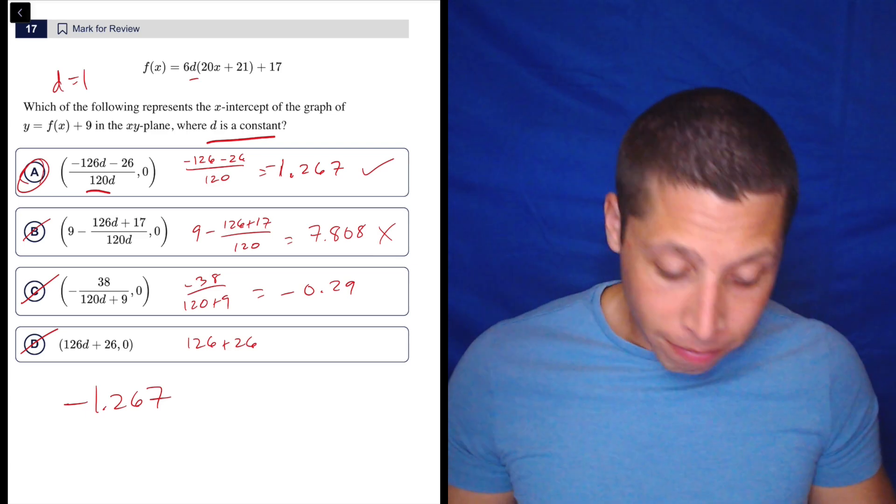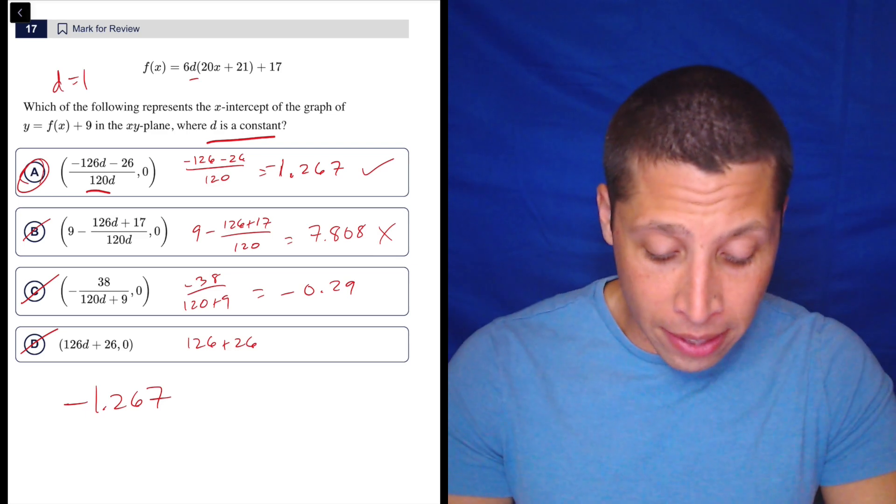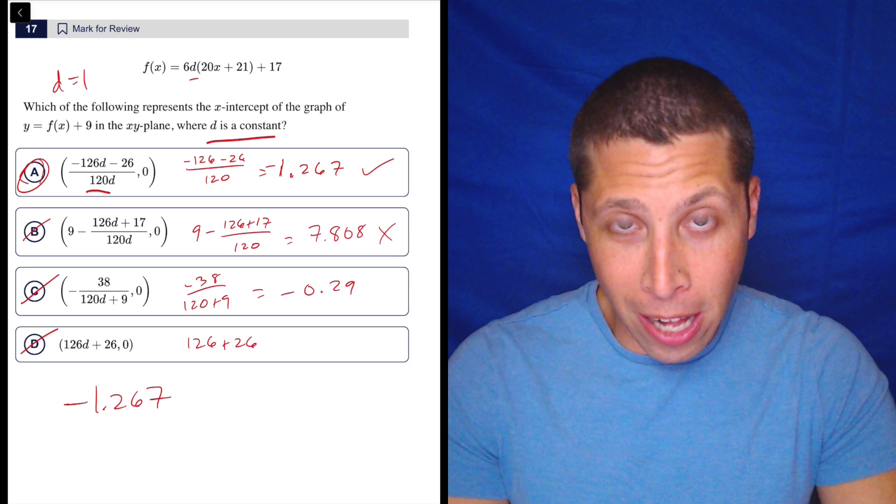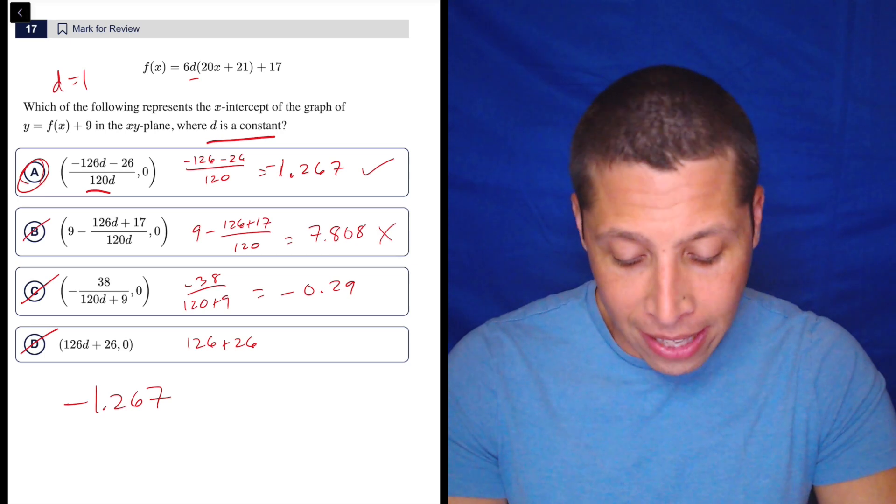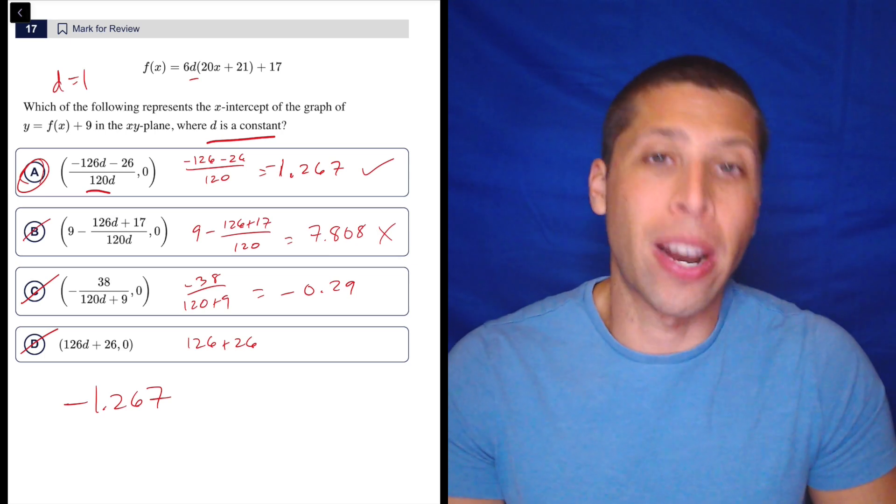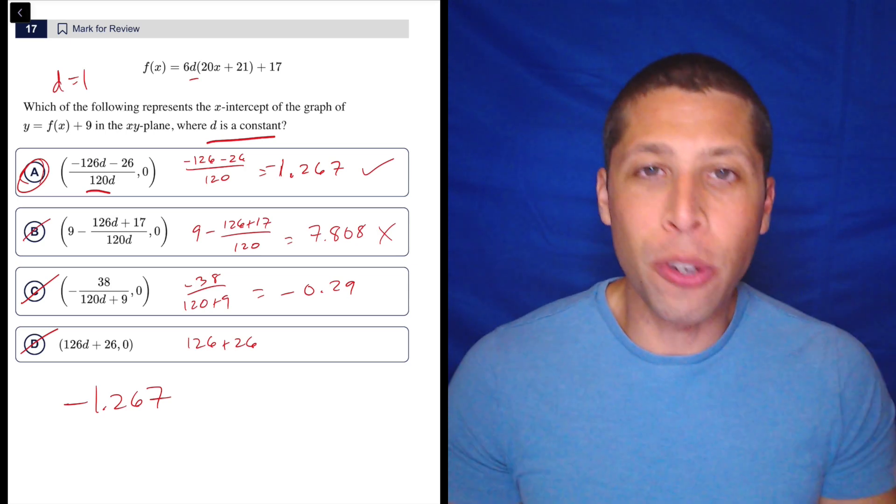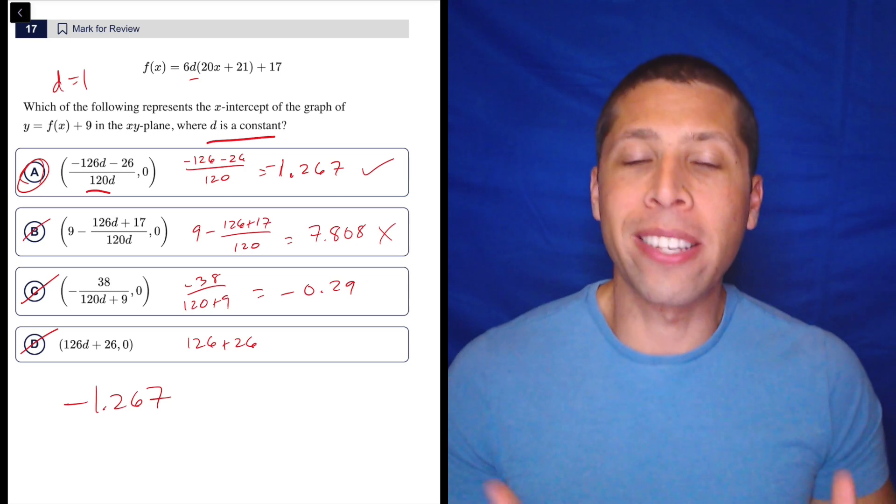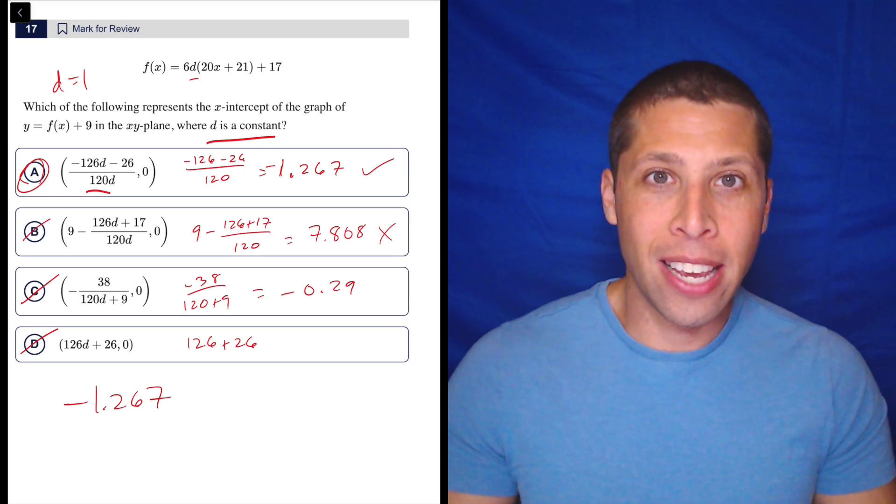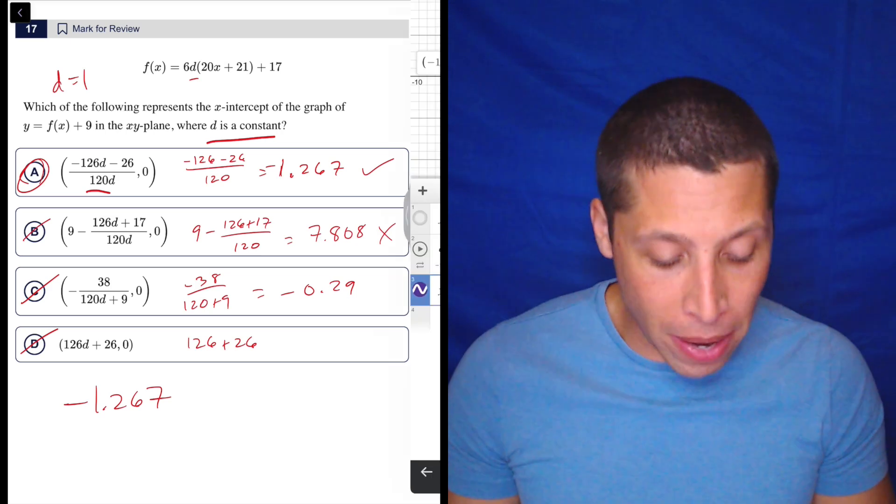That's it. Done. No real issues here. This explanation is way better than the college board's explanation, which is insane. Why would we want to work with such crazy fractions by keeping the D alive as a D? Don't do that. Just work with it as a number because if it's a constant, it's any number. It's any number we want it to be. We made it 1.